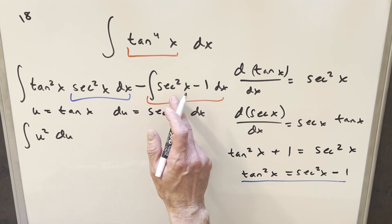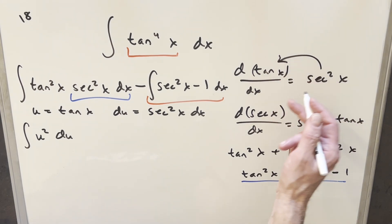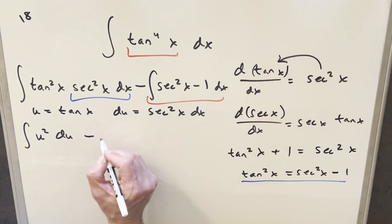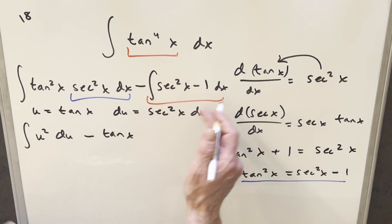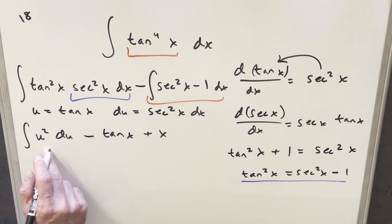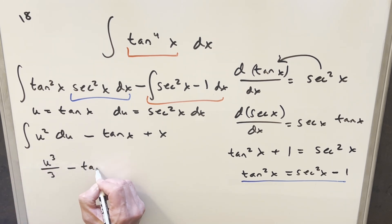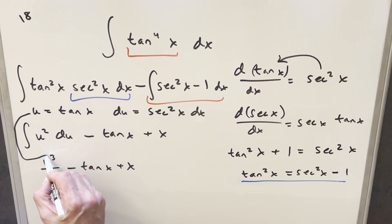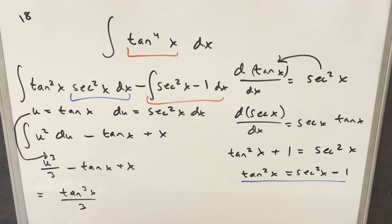For the remaining terms, we split into two integrals. The integral of secant squared x is just tan x, so this piece gives minus tan x. Distributing minus 1 times minus 1 gives plus 1, and the integral of 1 is x, giving plus x. Back over here, integrating u squared by the power rule gives u cubed over 3. Back-substituting, the final answer is tan cubed x over 3 minus tan x plus x plus C.